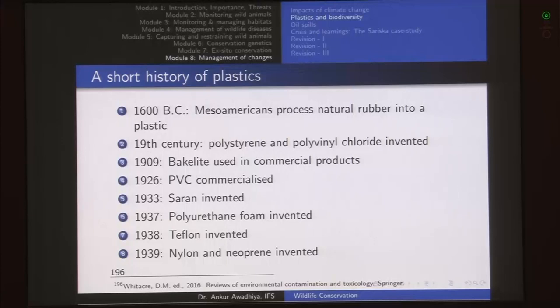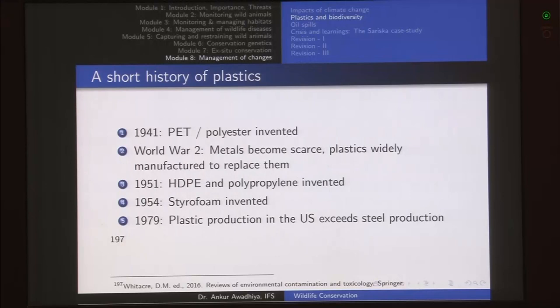Saran is a plastic we normally use in the form of wraps, mostly in the food industry to wrap items. In 1937, polyurethane foam was invented, used mostly for insulation properties. In 1938, teflon was invented and is used in most of our non-stick cookware. In 1939, nylon and neoprene were invented and have become very important plastics since then. Then in 1941, PET or polyethyl terephthalate and polyester were invented — the plastic we see all around us in the form of plastic bottles used for sealing water.